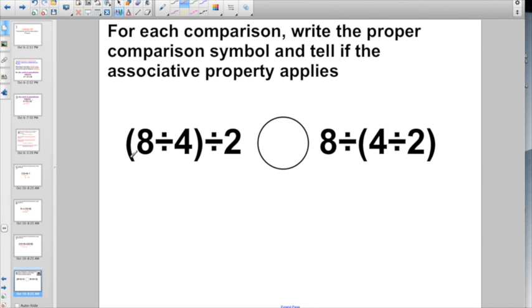But I have the same numbers—it's got to be equal. Well, let's find out. Do the work in parentheses first. 8 divided by 4—4 divided by 2 is 2. 8 divided by 2—hey, that's 4.